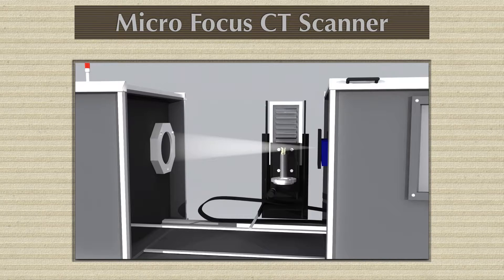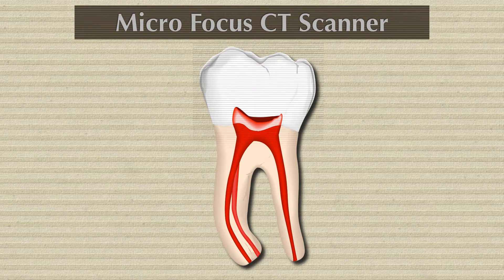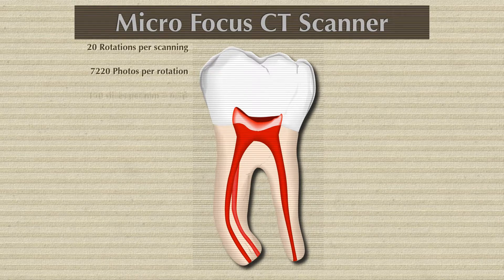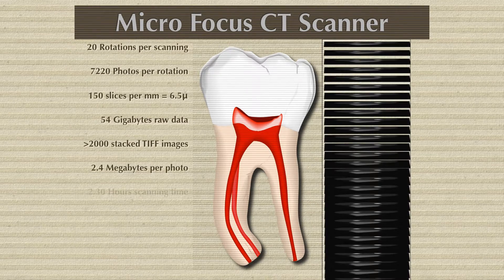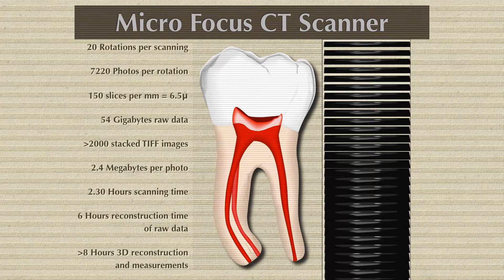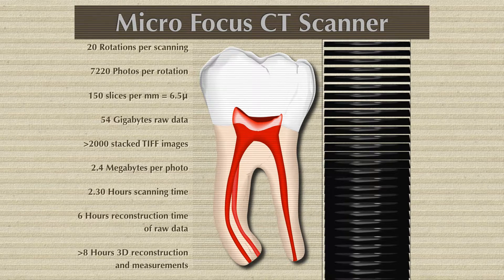The nano CT gives better definition — the voxel is smaller and the resolution is far better. A tooth can now be divided into approximately 2,000 sections. It rotates 20 times per scan, producing 7,220 foils per rotation. I can divide a millimeter into 150 slices, giving 6.5 microns. For reference, a histological section under a microscope is 5 to 6 microns — so we are achieving nearly the same thickness. This produces 54 gigabytes of raw data and over 2,000 stacked images.